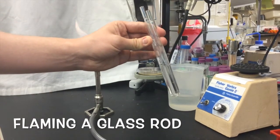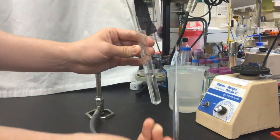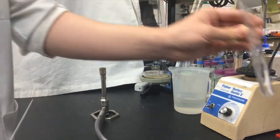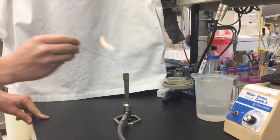Alternatively, it is sometimes faster to use a glass rod as an inoculating loop. I store the glass rod in 90% ethanol and flame it in the Bunsen burner just before I use it to transfer cells to liquid or streak an agar plate.